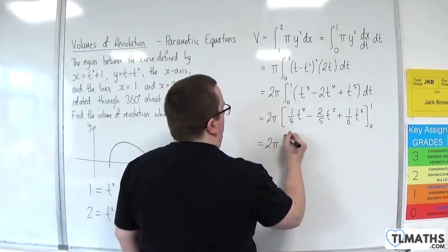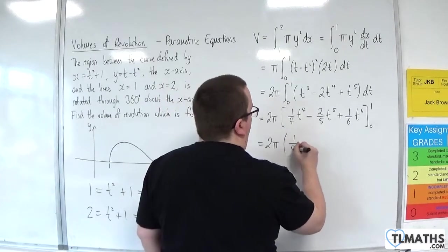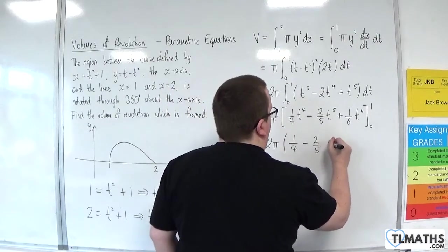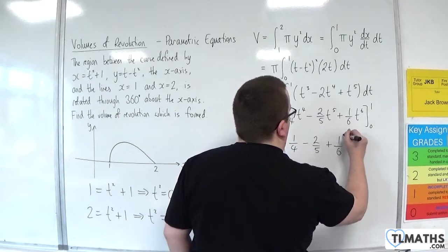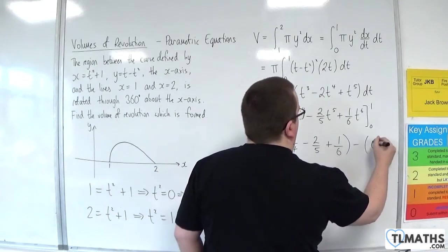So we've got the 2 pi up the front. Substituting the 1 would be 1 quarter, take away 2 fifths, plus 1 sixth. And then we're going to be subtracting, well, 0.